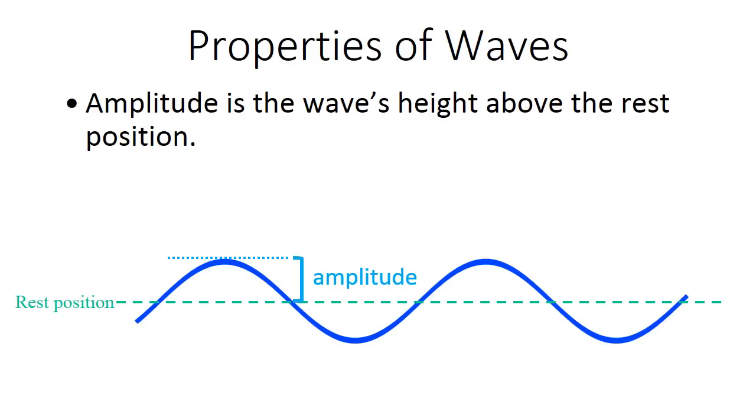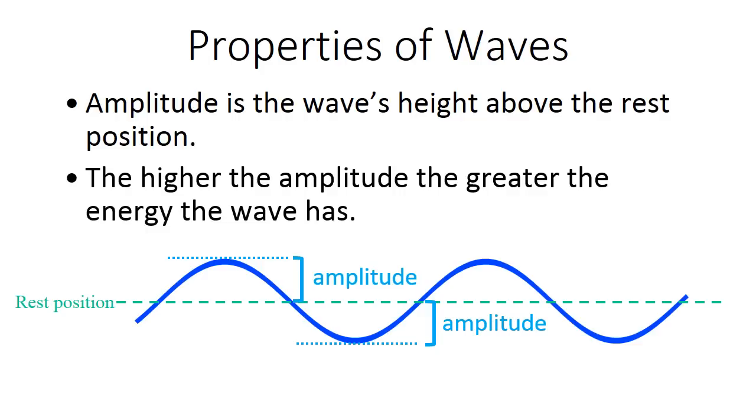It wouldn't be way down in the trough. So that's the amplitude. The amplitude is also the depth below the rest position. It'll be pretty much the same as the height above. And the higher the amplitude, the greater the energy the wave has. So the higher the waves, the more energy there is.